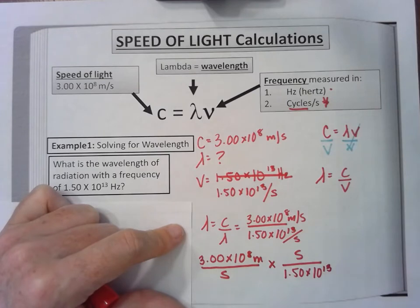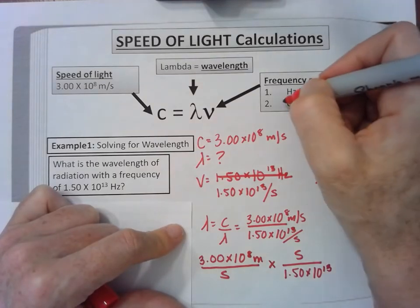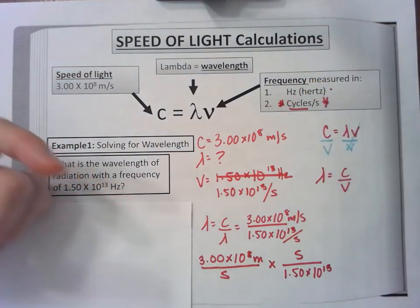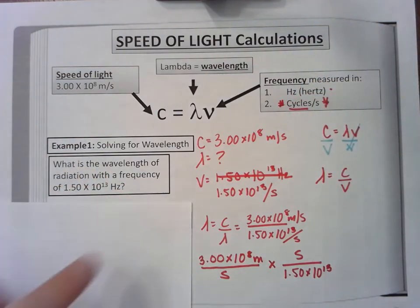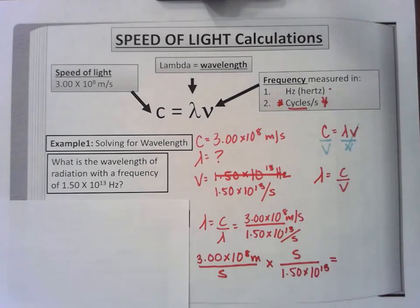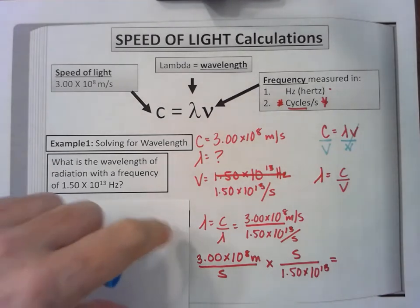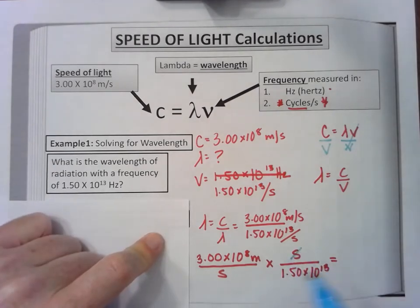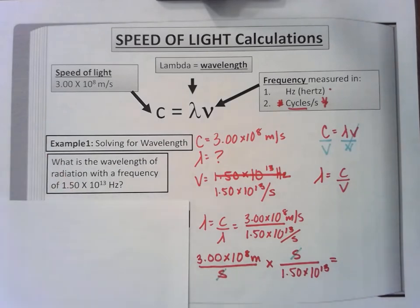There's no unit here because it's the cycles. This second is a numerator and this one is a denominator, therefore they cancel out.